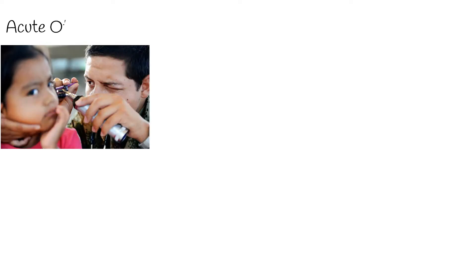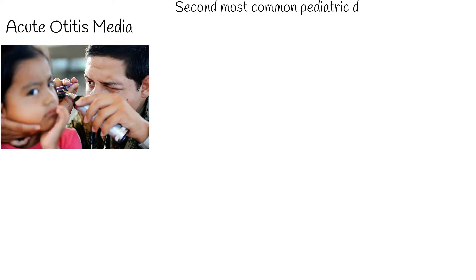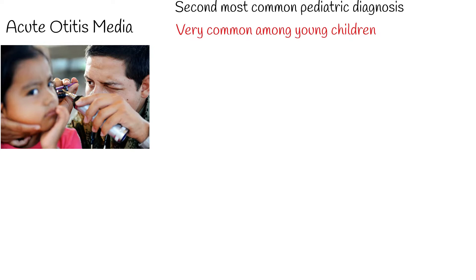Acute otitis media is the second most common pediatric diagnosis in the emergency department, following upper respiratory infections. It is very common among young children — 80% of children will experience otitis media during their lifetime. It is especially common between the ages of 6 to 24 months.